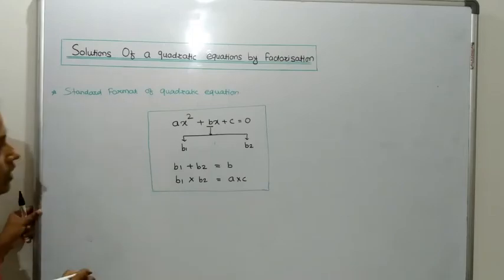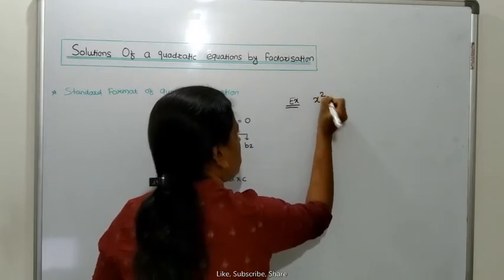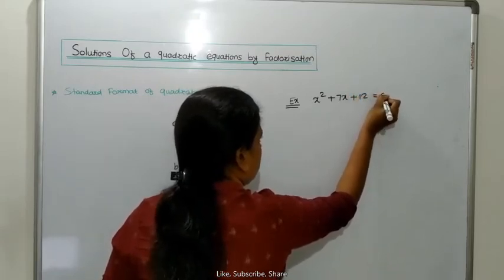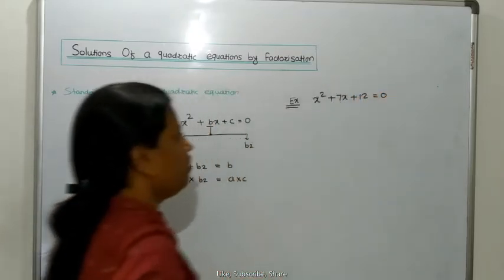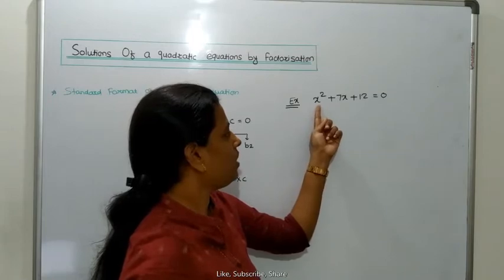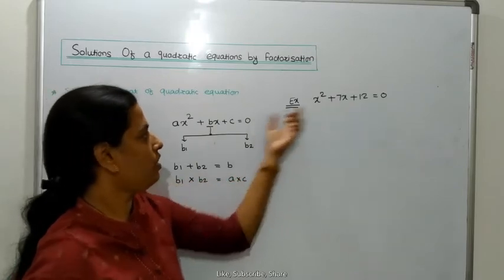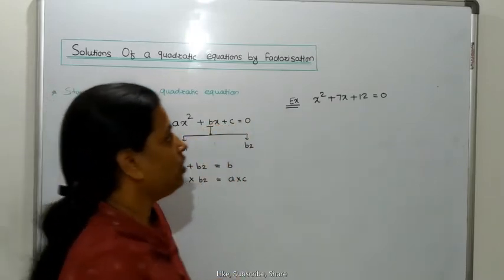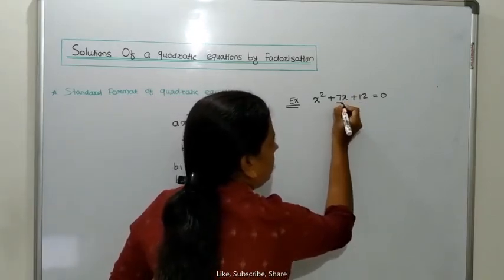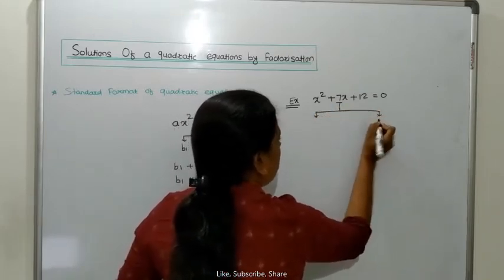We have to discuss one example: x squared plus 7x plus 12 is equal to 0, and we have to find out the solution of this equation. This equation is the quadratic equation because it is in the form of A x squared plus Bx plus C. When we find the roots, we take the 7, and 7 is factorized into 2 parts.